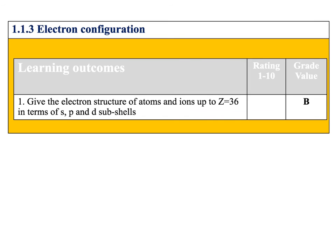Hopefully in this video you've gained a better understanding of electronic structure of ions up to Z equals 36 — proton number 36 — in terms of S, P and D subshells. If you've got any questions, please leave them in the comments below.